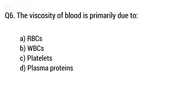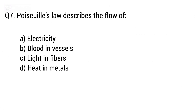Question 6: The viscosity of blood is primarily due to? Option A: RBC. Option B: WBC. Option C: Platelets. Option D: Plasma protein. The right answer is option A — RBC. Question 7: Poiseuille's law describes the flow of? The right answer is option B — blood in vessels.